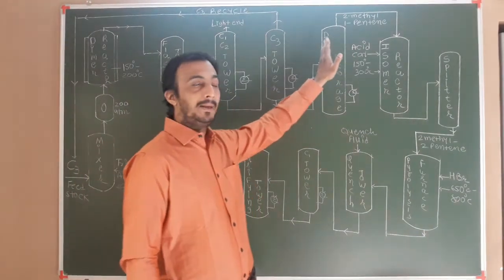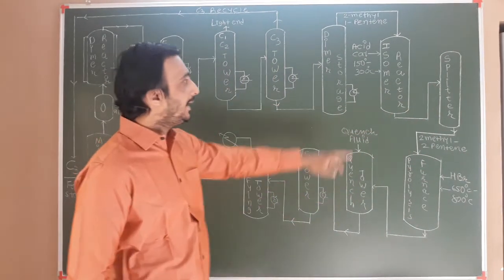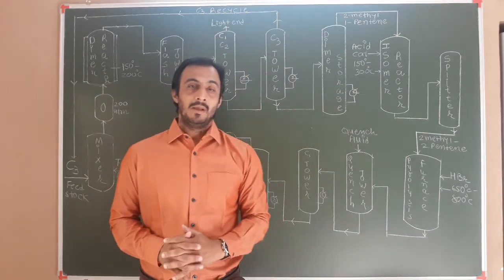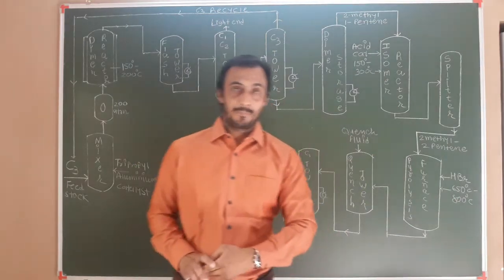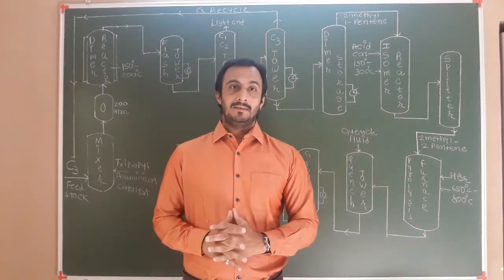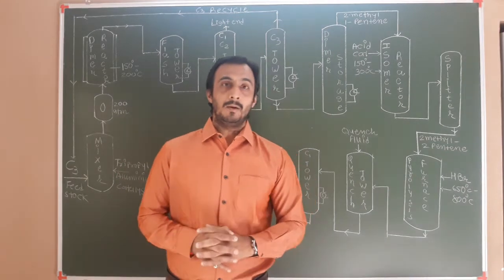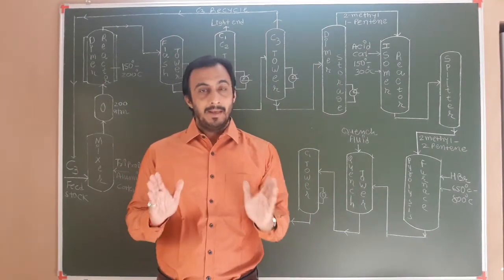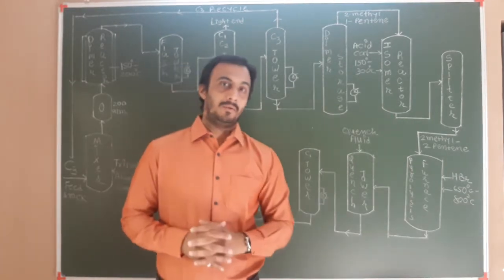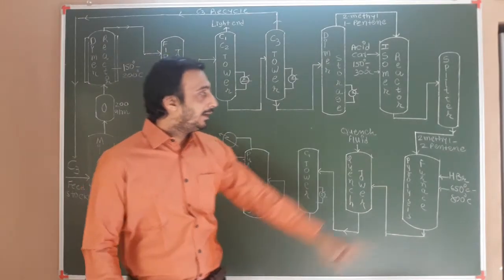Now 2-methyl-1-pentene is further taken into an isomer reactor. Here the reaction takes place in the presence of an acid catalyst at 150 to 300 degrees Celsius temperature. What is isomerization? Isomerization is a process where the same molecular formula compound rearranges structurally. Due to isomerization, we get 2-methyl-2-pentene.